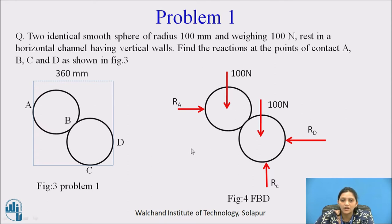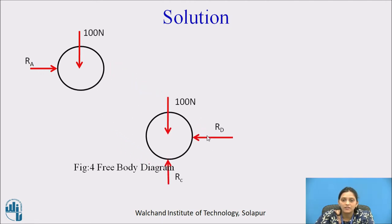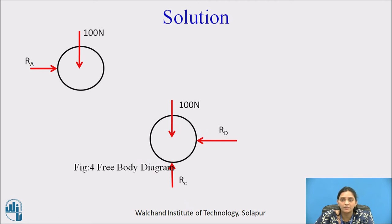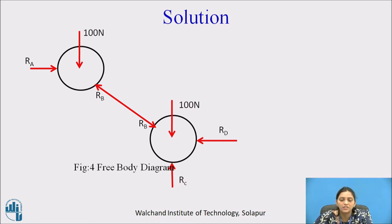This is the complete free body diagram of cylinder 1 and cylinder 2. For individual cylinders, we separate cylinder 1 and cylinder 2. As they are in contact with each other, there is a mutual reaction between the two cylinders. This mutual reaction is named RB at point B.